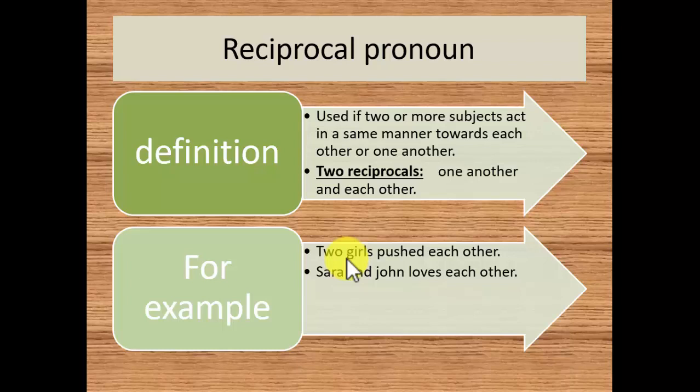There will be one A and another B performing the same action in the same manner. This is reciprocal form. Sarah and John loves each other. Sarah and John are two subjects both involved in the same manner in one activity, the liking activity.